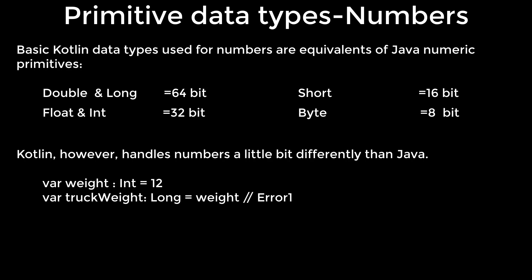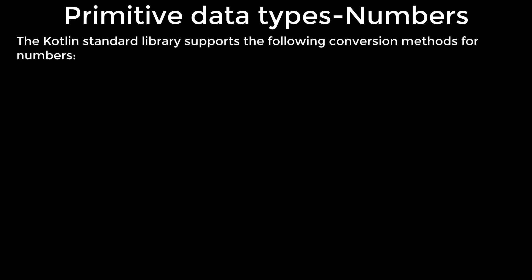This means that we cannot assign a value of type int to the long variable without an explicit conversion. As we said in Kotlin, everything is an object, so we can call the method and explicitly convert int type to long to fix the problem. At first this may seem like boilerplate code, but in practice this will allow us to avoid many errors related to number conversion and save a lot of debugging time. This is actually a rare example where Kotlin syntax has more amount of code than Java.